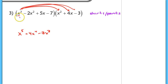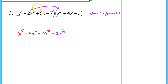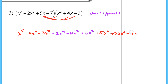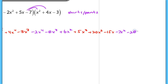Moving to the next term: never multiply terms that are inside the same parentheses. Take negative 2x squared and multiply across: negative 2x squared times x squared gives negative 2x to the fourth; times 4x gives negative 8x cubed; times negative 3 gives positive 6x squared. It's very easy to make mistakes with signs and exponents, so be careful and double check. Then the next term gives 5x cubed, then 20x squared, then negative 15x. Last term: negative 7 times x squared gives negative 7x squared; negative 7 times 4x gives negative 28x; negative 7 times negative 3 gives positive 21.